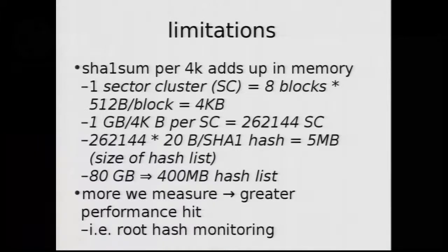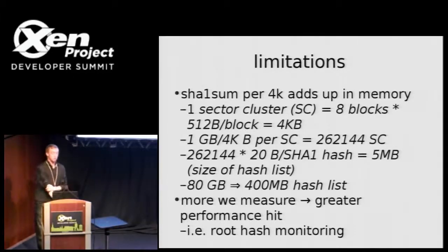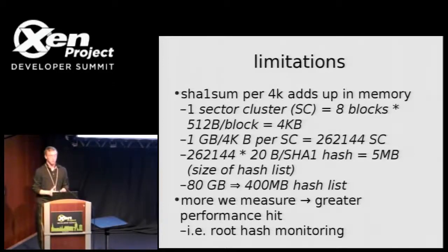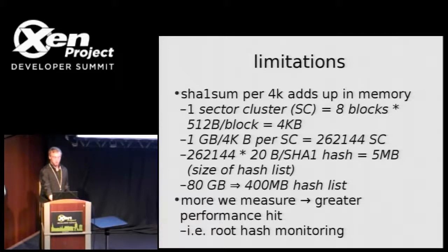Performance is a huge concern for us. SHA summing a block of 4K quickly adds up in memory — for a one gig disk we have a hash list of five megabytes, which isn't bad. But if we keep scaling up there's eventually going to be some bloat, and I'll be showing you some performance data measured for a very simplistic case of just reads and writes.